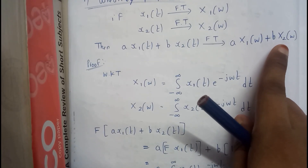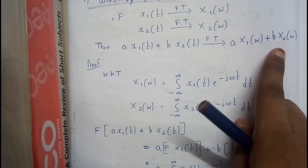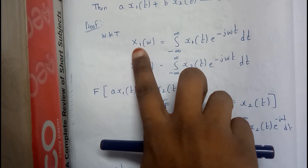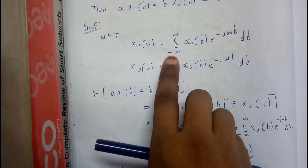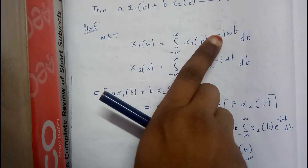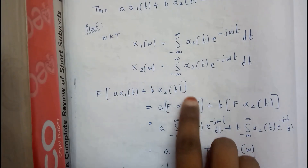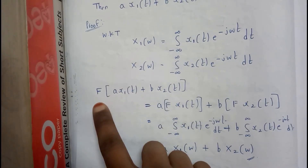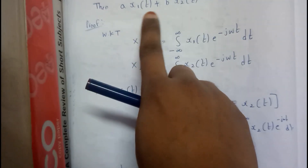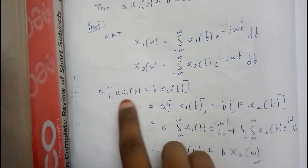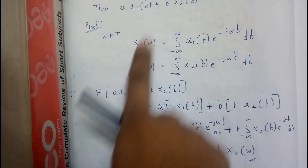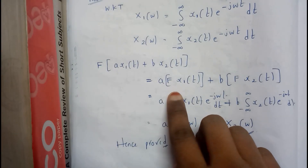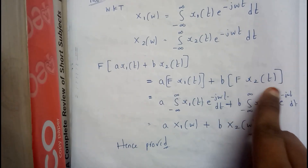We have already discussed these things in mathematics. So we know that the Fourier transform of x1(t) is X1(ω) = integral from minus infinity to infinity of x1(t)·e^(−jωt) dt, and X2(ω) = integral from minus infinity to infinity of x2(t)·e^(−jωt) dt. The Fourier transform of A·x1(t) + B·x2(t) is equal to A times the Fourier transform of x1(t) plus B times the Fourier transform of x2(t).